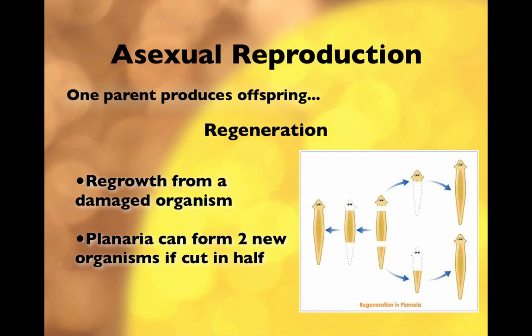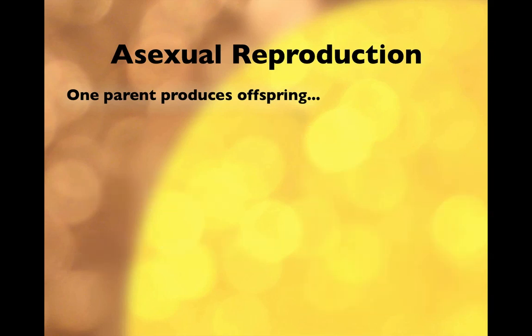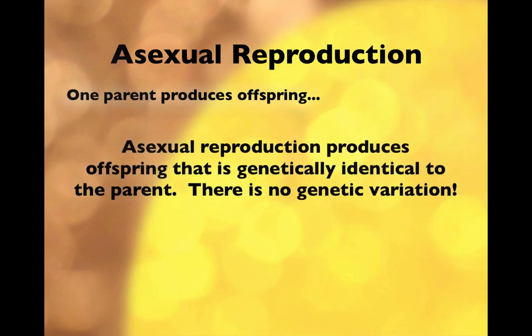So those are the types of reproduction. Sexual reproduction produces genetically diverse organisms — slightly different from the parent. Asexual reproduction produces genetically identical organisms to the parent, so there's no genetic variation through reproduction. There are ways genetic variation can occur in asexually reproducing organisms, but it's through mutation, not reproduction — a topic for yet another presentation.